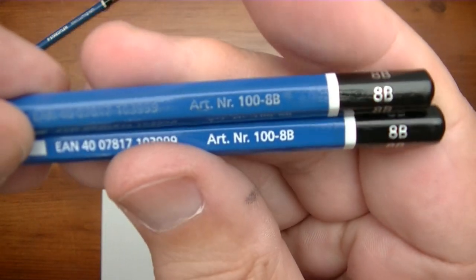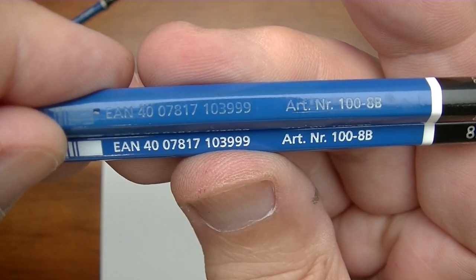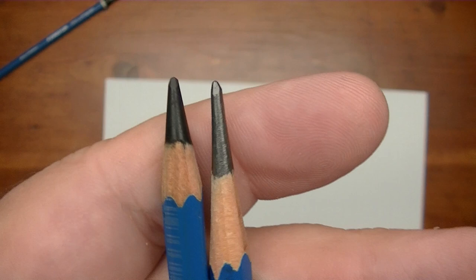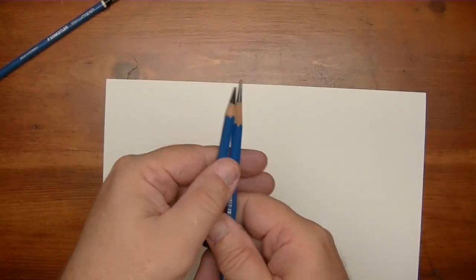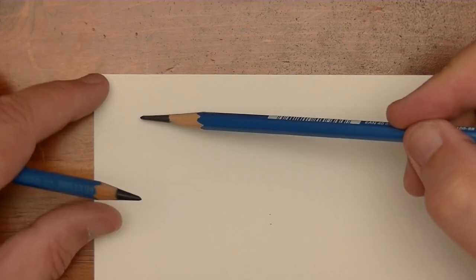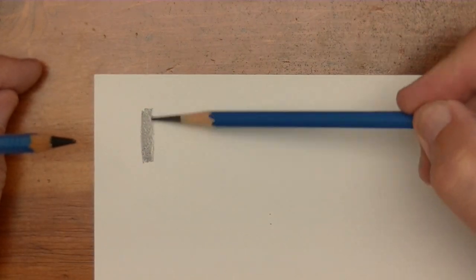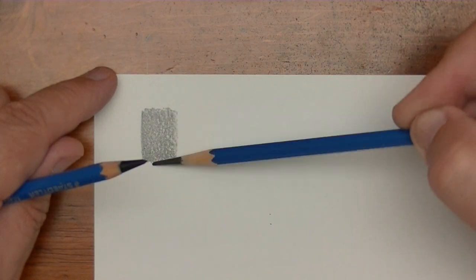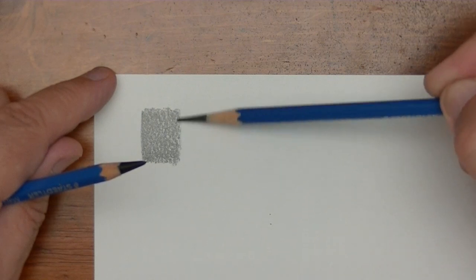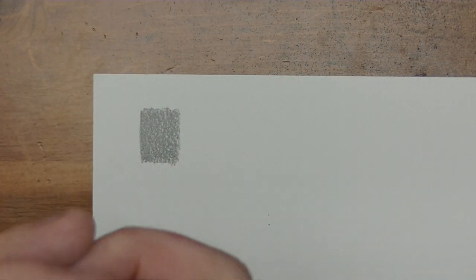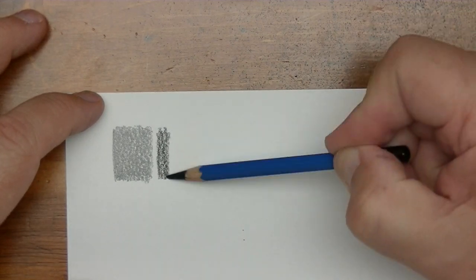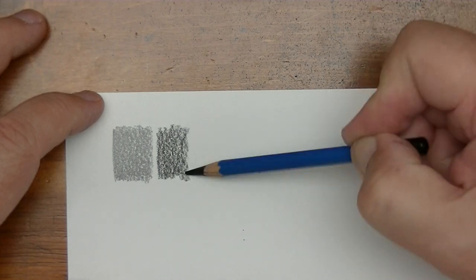Here is a complete set from 9H as you see right there, and then it gets all the way over here to 9B. Now I'm going to pull out the 8B pencil here. Now let me give it a little bit of a sharpen. Okay, there we go. Now notice that I have two 8Bs, same company, and if you turn them over, look at the numbers - they're identical. Yet these two pencils, you can see real quick, are not the same.